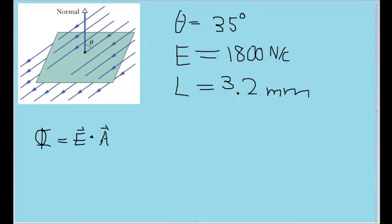Now because we are given the side length of the square, we can use this to find the magnitude of the area pretty easily, and we are just straight up given the magnitude of the electric field vector.